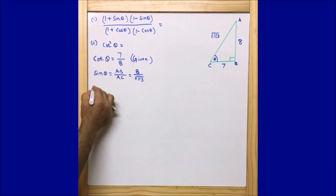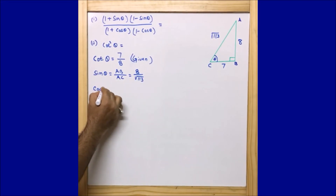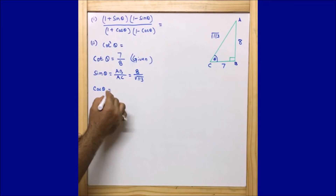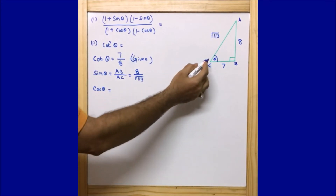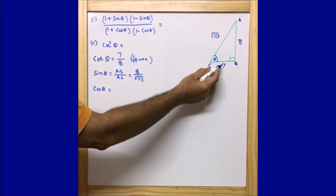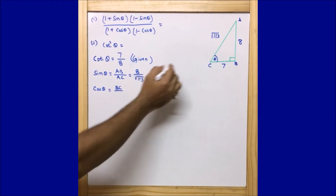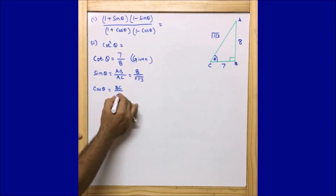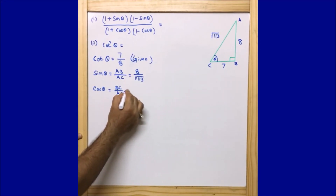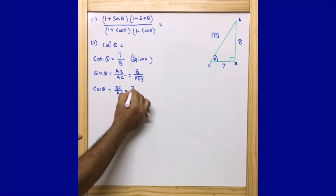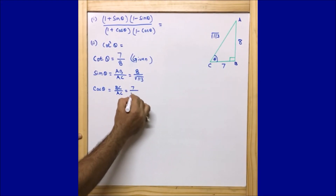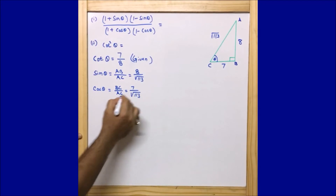And cos θ: cos θ = adjacent side to angle θ / hypotenuse = BC / AC = 7 / √113.